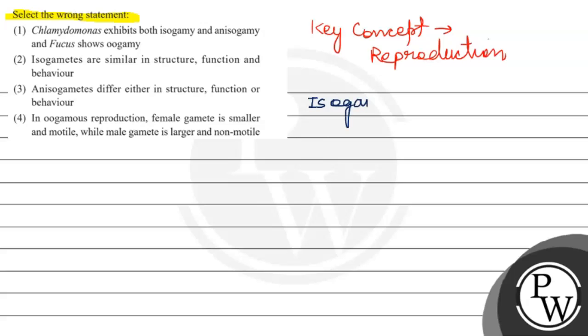What is isogamy? This refers to gametes. What is the condition of gametes? Male and female gametes.